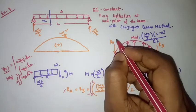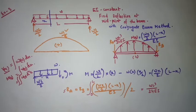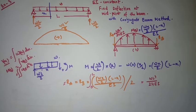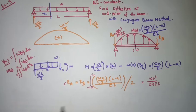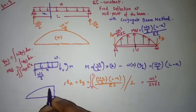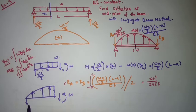Integrating from 0 to L, it will be found that the reaction equals wL³/24EI. This is also the value of the shear. Now you have to find out the moment diagram for the mid-section, that is the deflection of this beam. So you have to cut the beam at the midpoint. Here is the shear and this is the moment, and the reaction is wL³/24EI.